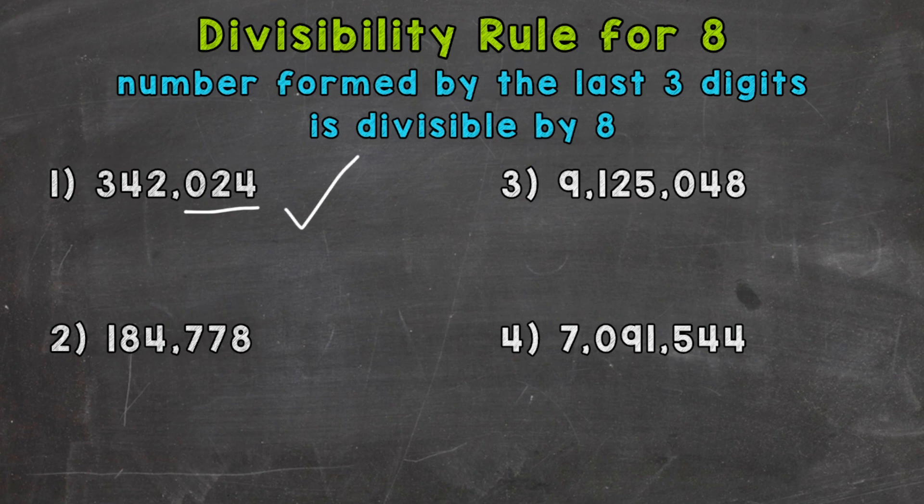On to number 2, where we have 184,778. So our last three digits here are 778. So we need to see if that number is divisible by 8. I'm not sure off the top of my head, so let's go to the side here and do a quick division problem.